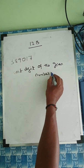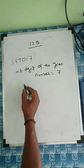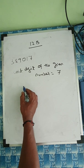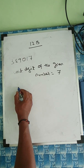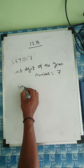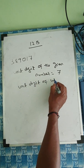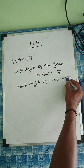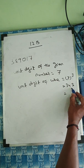Since the unit digit of the given number is 7, we find the unit digit of the cube root. We check: 7 cubed is 343, so the unit digit of the cube root will be 3.